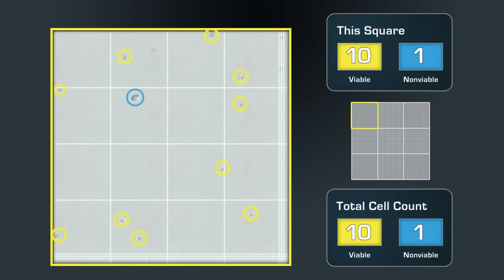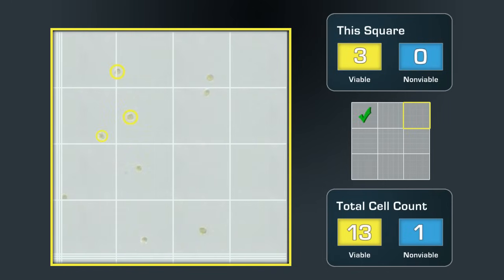There are ten viable cells and one non-viable cell in the first square. Now, the top right square. There are nine viable cells and no non-viable cells.